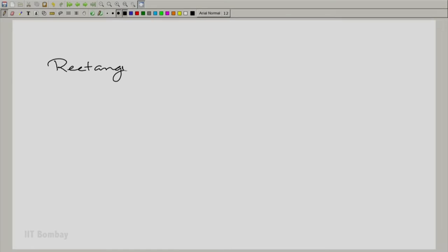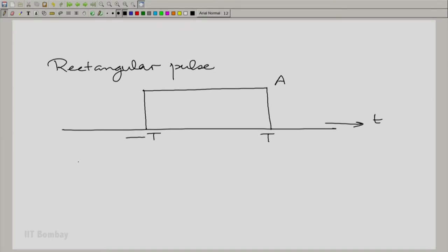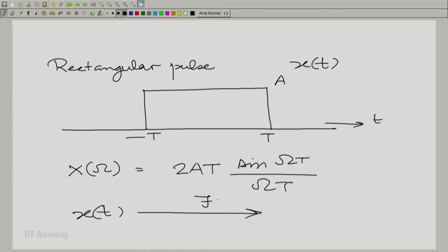Let us take an example to illustrate this point. Let us take the very same rectangular pulse that we had. Recall, it was of height a from -T to +T. We had worked out its Fourier transform: X(ω) was 2aT·sin(ωT)/(ωT). Here you have this rectangular pulse x(t) with this Fourier transform.